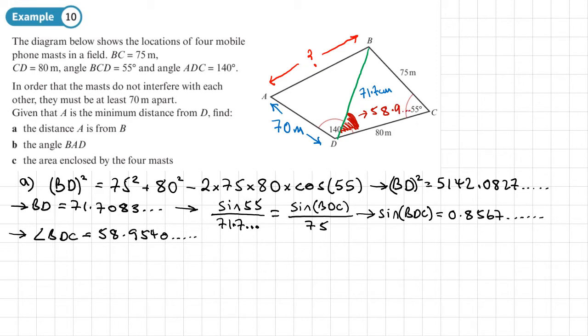I can use the exact value. So that means that this angle here, which is angle ADB, so angle ADB is going to be 140 minus this 58.9 figure. And that gives me 81.0459. And again, the exact value I'll have in my calculator. So I'll just put that angle in there, 81.04 dot dot dot.